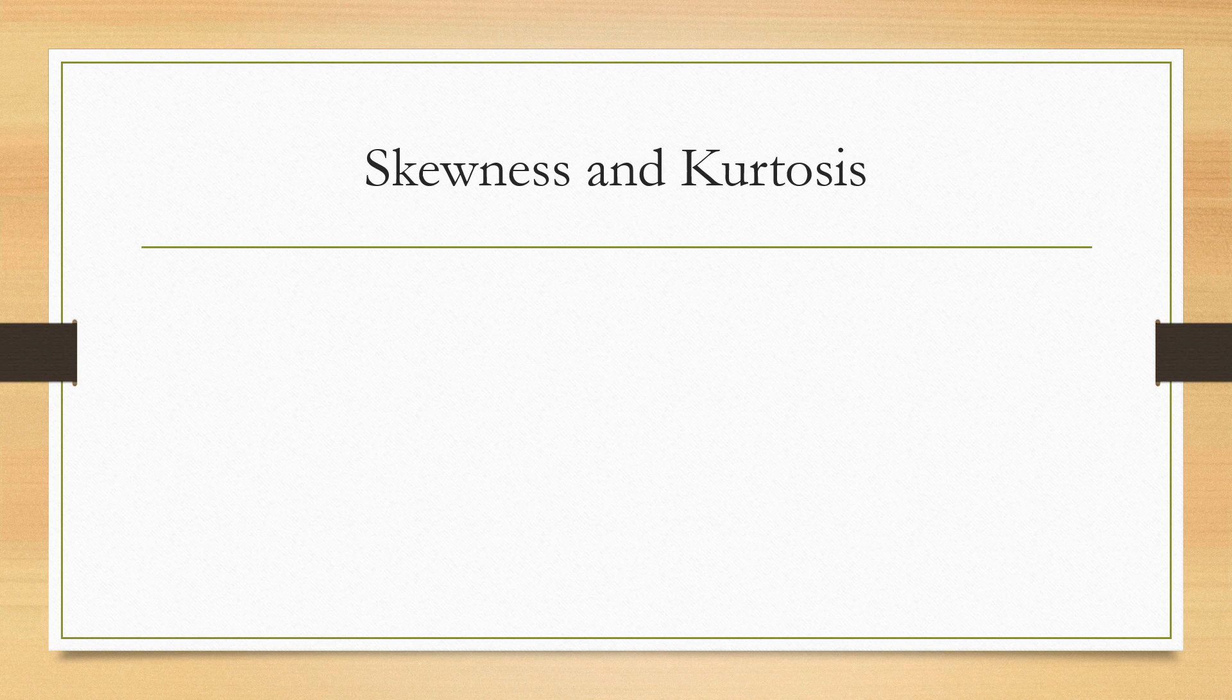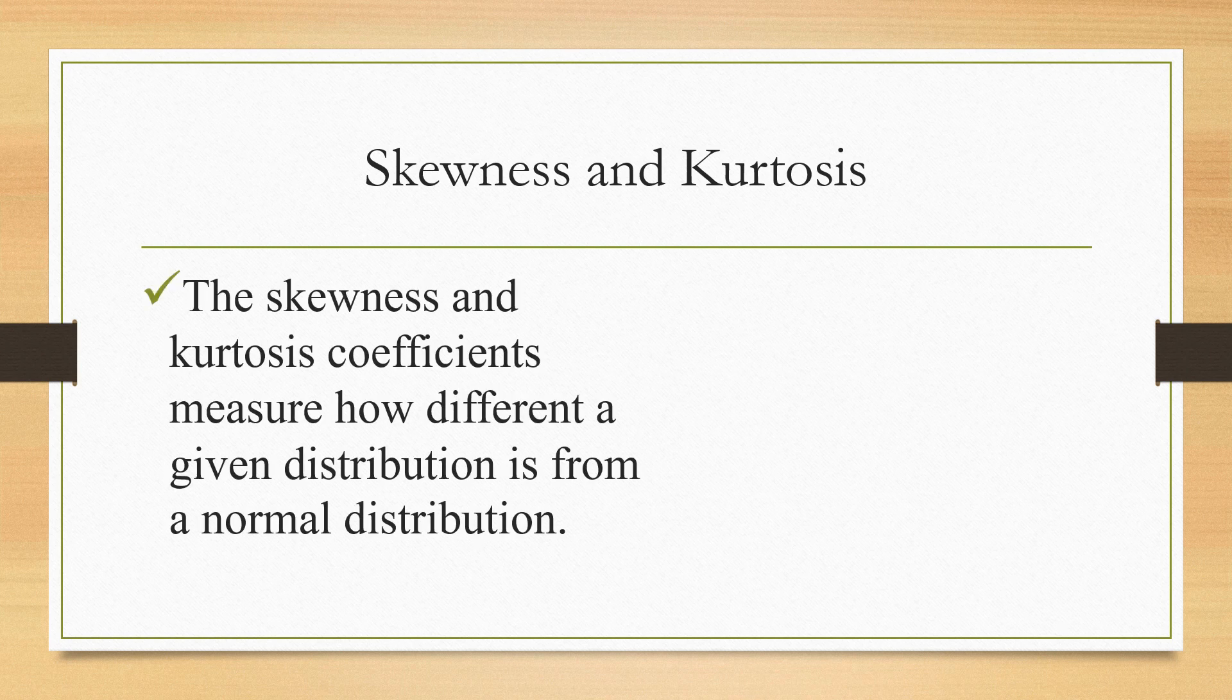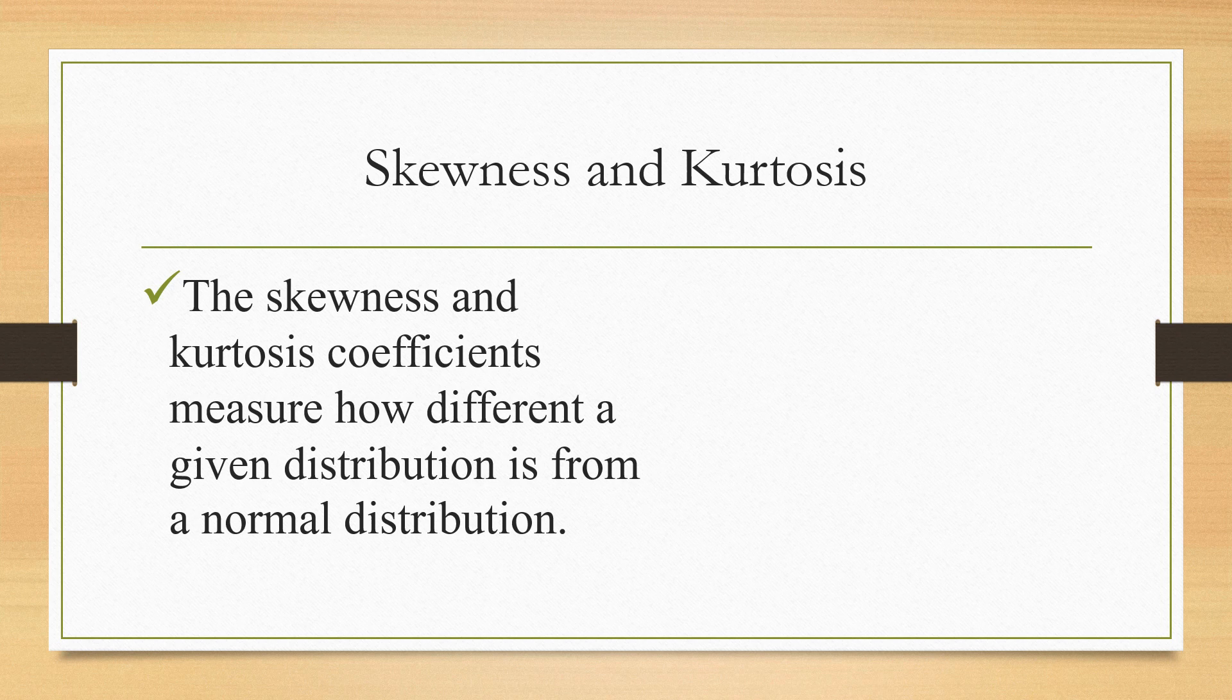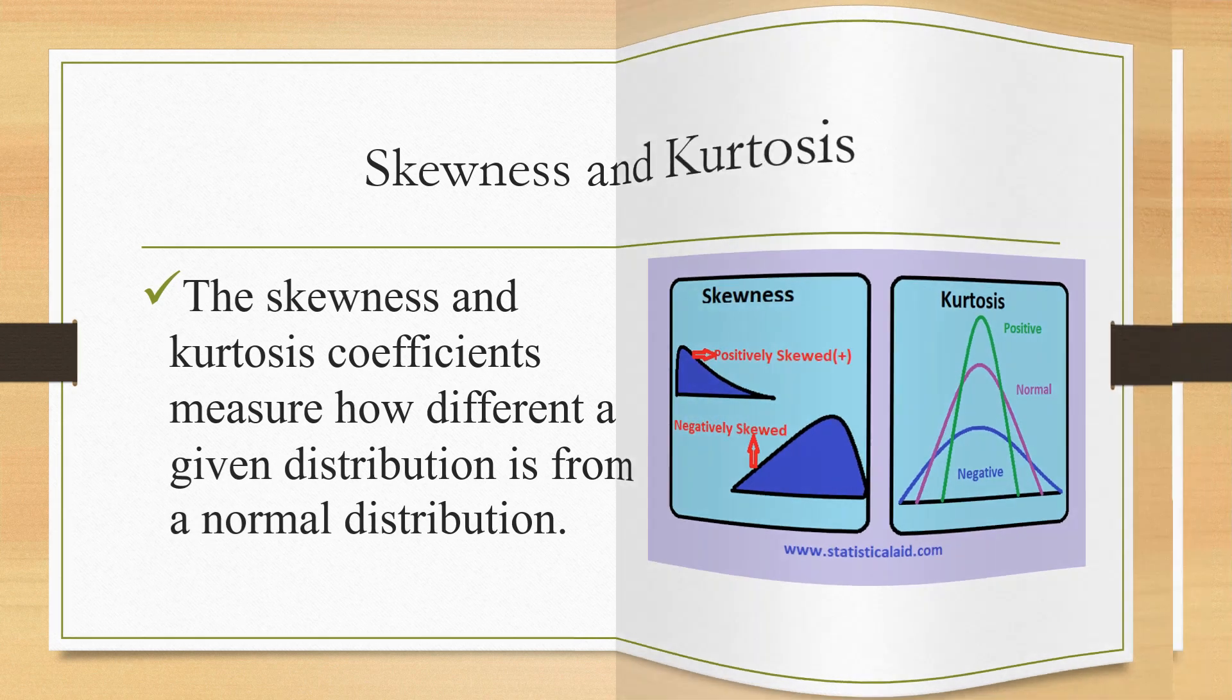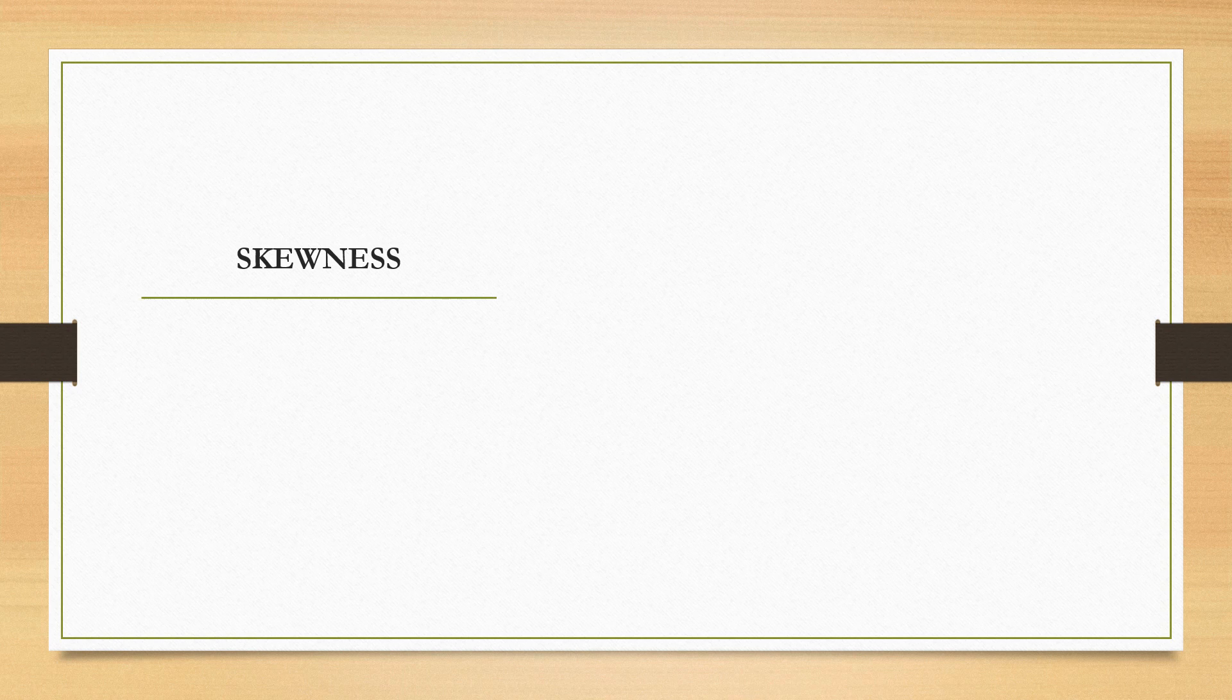And now, we are down to our last topic, which is all about skewness and kurtosis. Real-life data rarely, if ever, follow a perfect normal distribution. The skewness and kurtosis coefficients measure how different a given distribution is from a normal distribution. The skewness measures the symmetry of a distribution. The normal distribution is symmetric and has a skewness of zero.